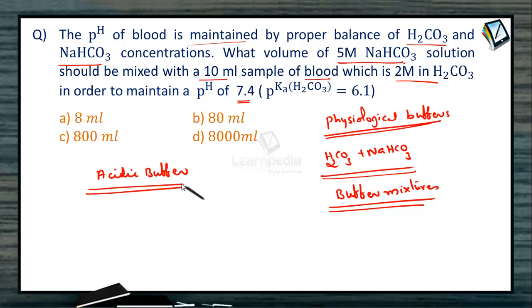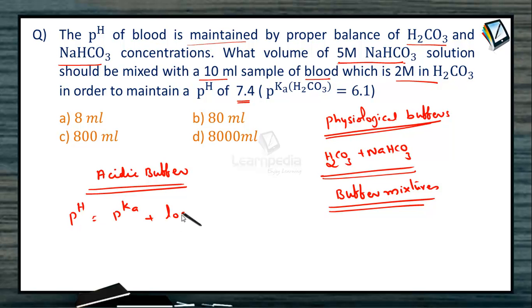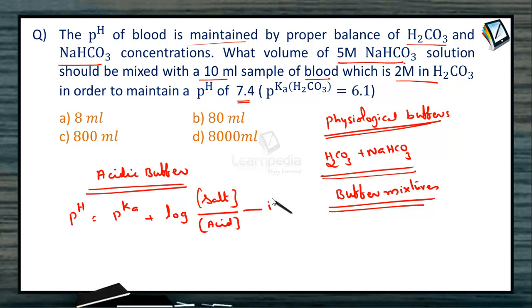For an acidic buffer, to calculate the pH, we use the Henderson's equation: pH = pKa + log([salt concentration] / [acid concentration]).